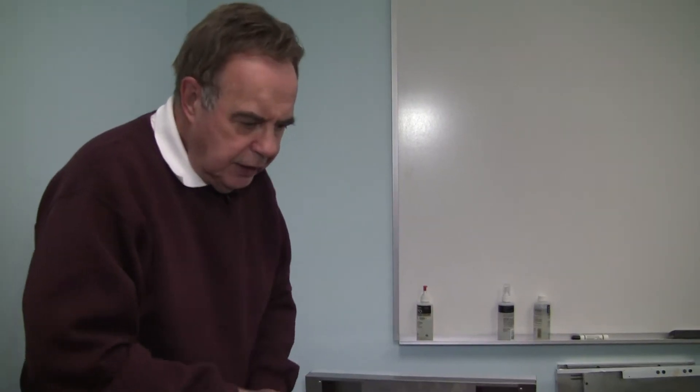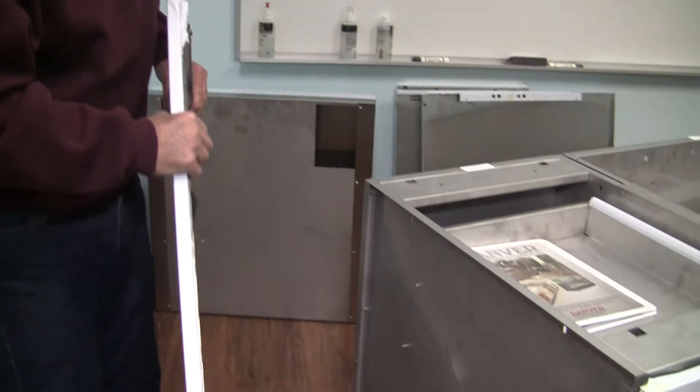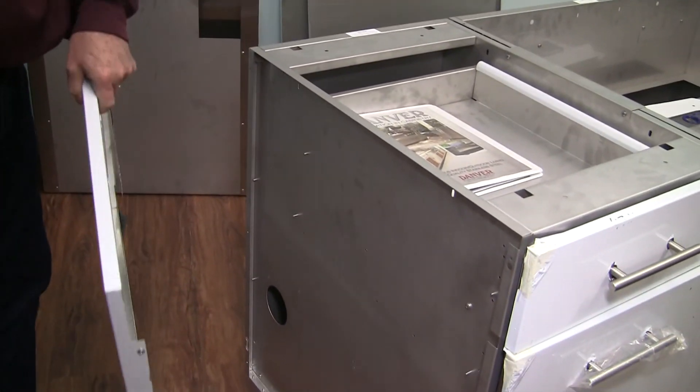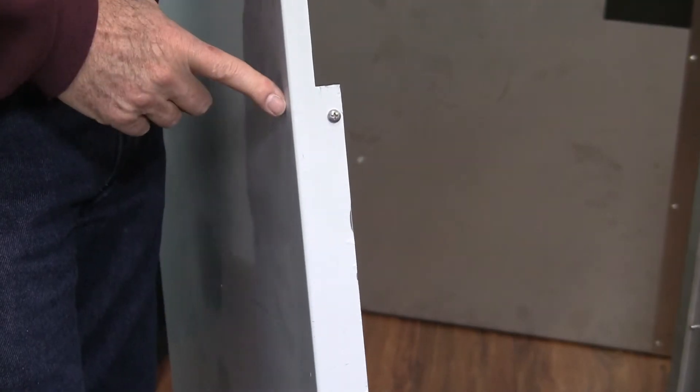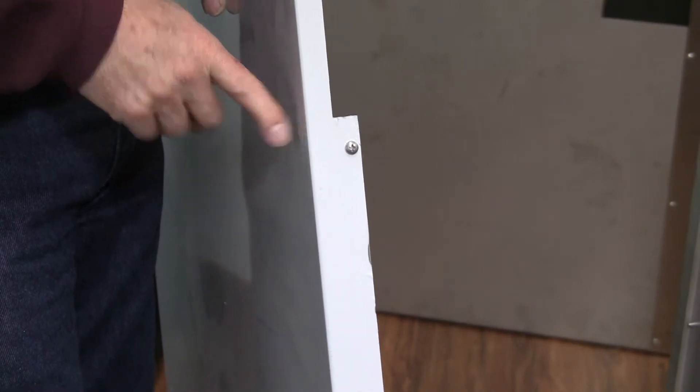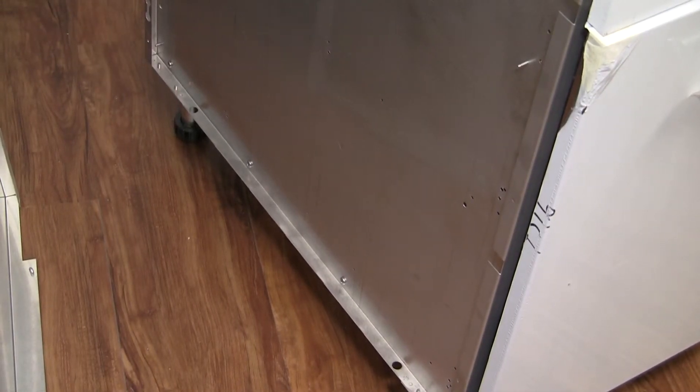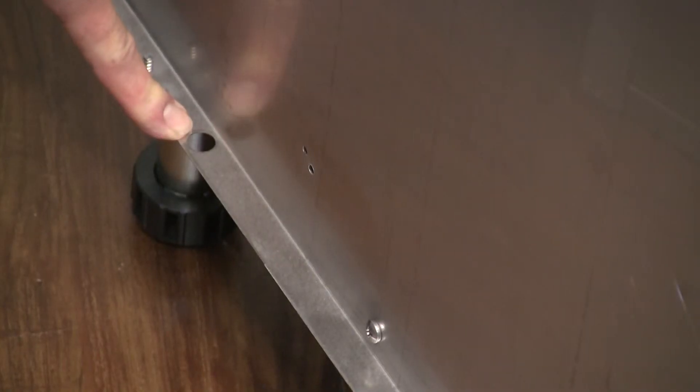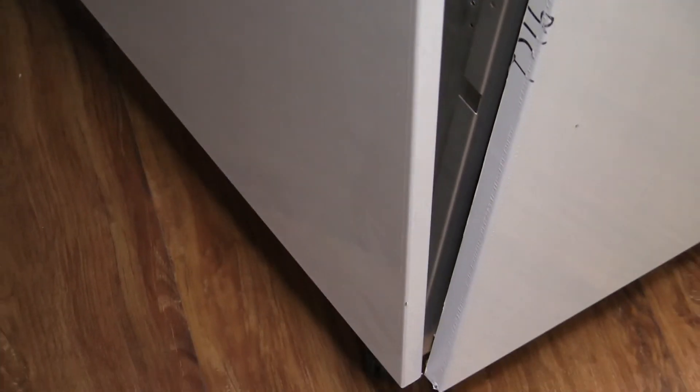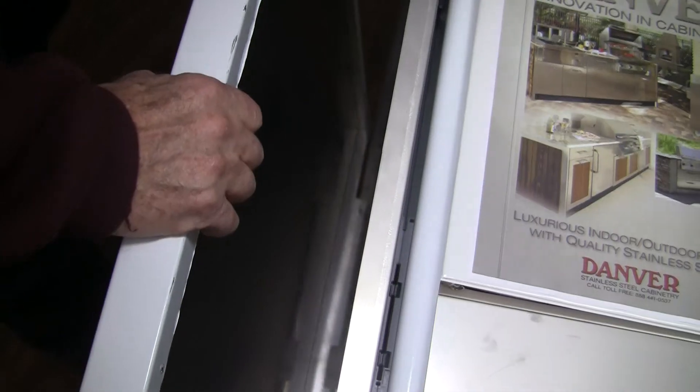In attaching a finished end panel, turn it upside down. You will notice that there are two screws pre-installed. At the bottom flange of the side wall are two half inch pre-drilled holes. Take the screw heads and use them as a guide.